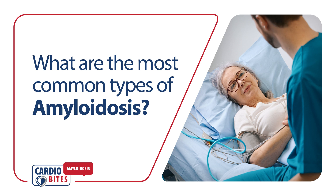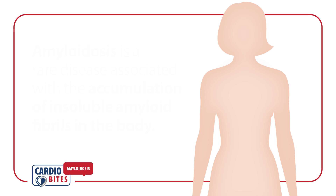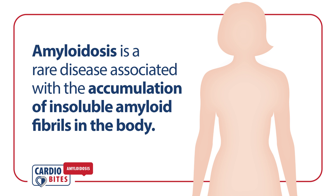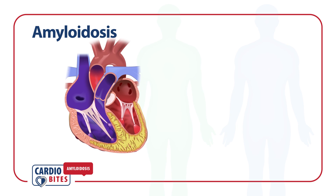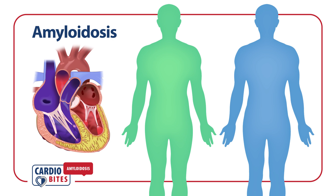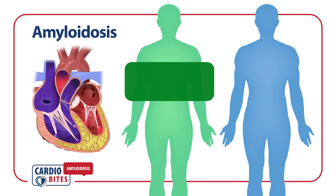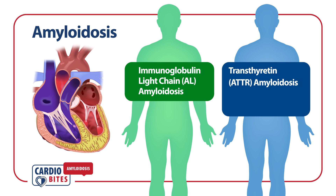What are the most common types of amyloidosis? Amyloidosis is a rare disease associated with the accumulation of insoluble amyloid fibrils in the body. Amyloidosis that affects the heart is most often associated with immunoglobulin light chain or transthyretin amyloidosis. The latter may be hereditary or wild type.